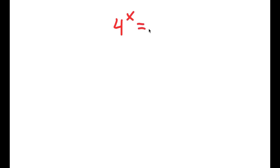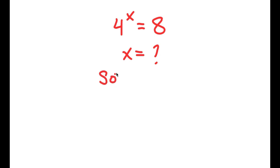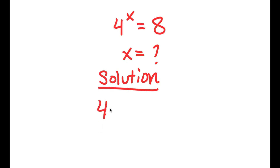In this problem I have 4 to the power of x is equal to 8. I want to find the value of x, so I'll start by rewriting my problem: 4 to the power of x is equal to 8.